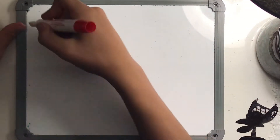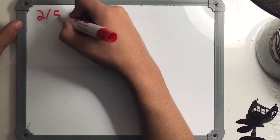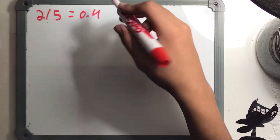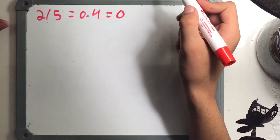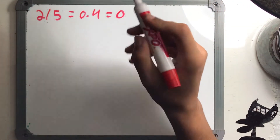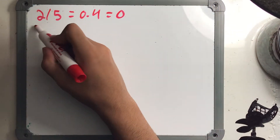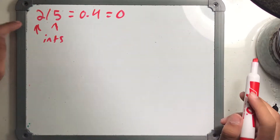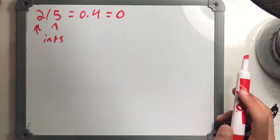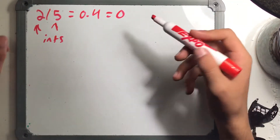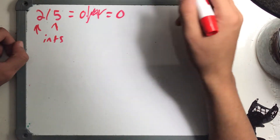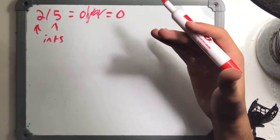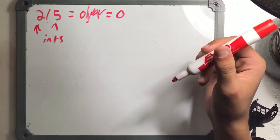Let's talk about integer division. 2 divided by 5 — the answer we know is 0.4, but in Java the actual answer is 0. This is because of truncation. Both 2 and 5 are integers, so the result must be an integer. 0.4 is not an integer, so Java chops off the decimal and everything past it, leaving just 0.